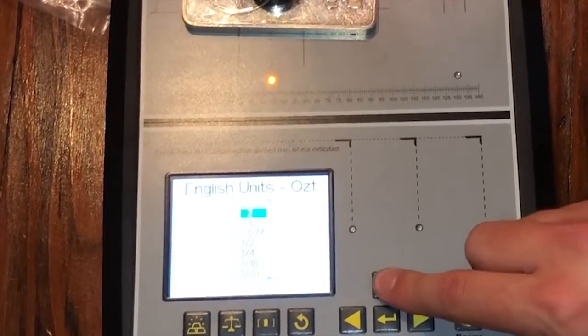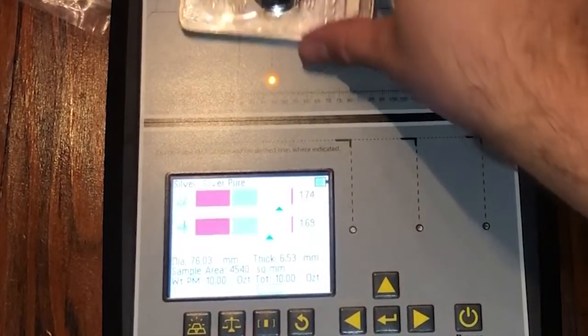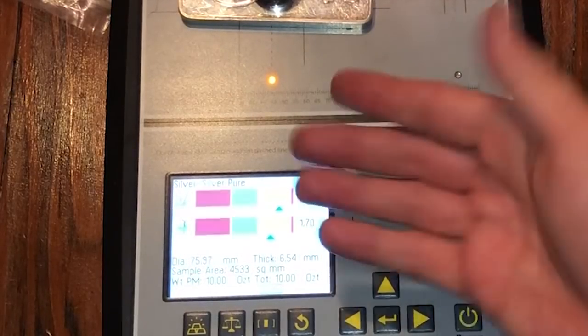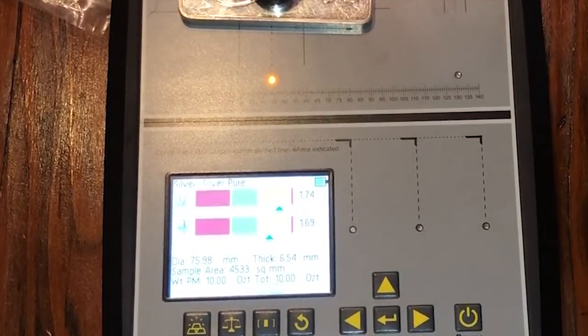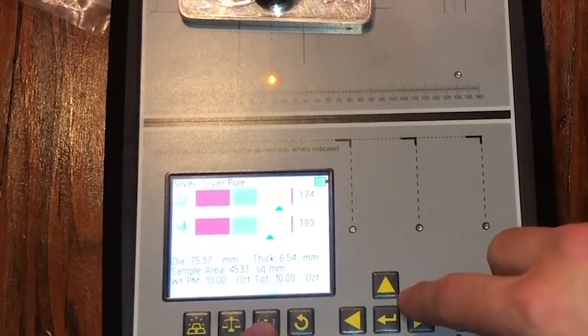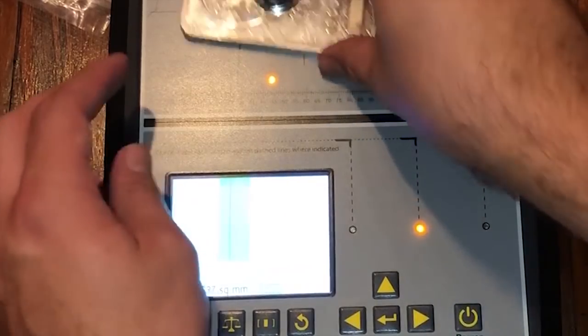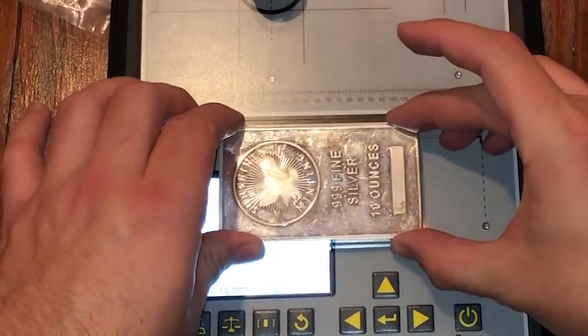We go here, change that to 10 ounce, take it off. Before it was giving us a red alert and it was saying small, it was too small. Now they're both in the orange so now I'm going to go to measure and I'm going to go down here to rectangle.